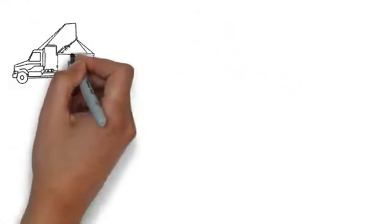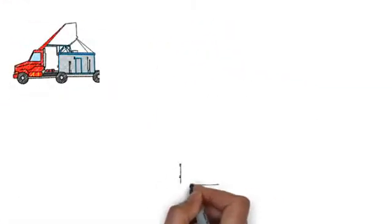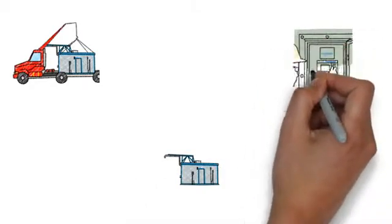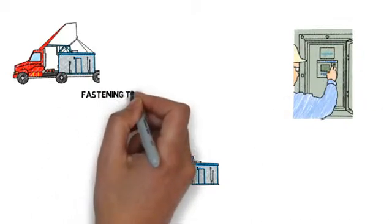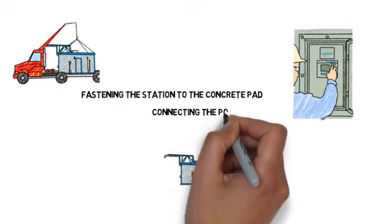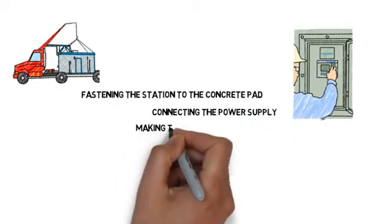Deliver. Stations are shipped to site complete and ready to operate. Once on site, the system is lowered onto a customer installed concrete pad. The only customer connections required are fastening the station to the concrete pad, connecting the power supply, and making the water connection.